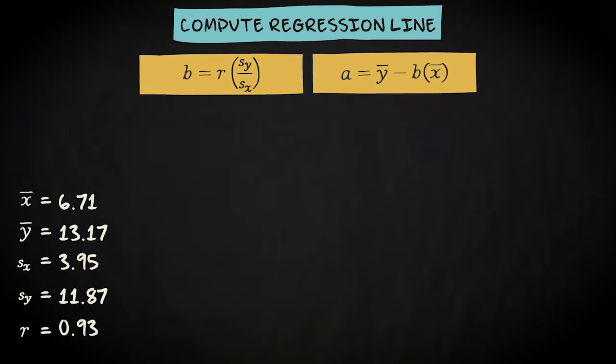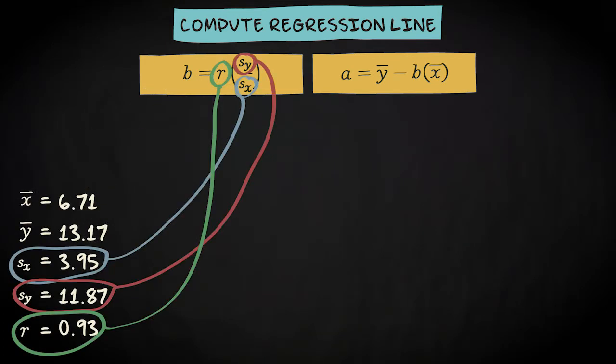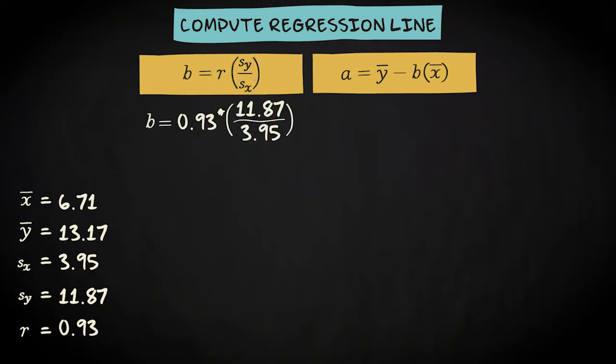These are the means, standard deviations and Pearson's r of our study. So to find the regression coefficient, we multiply 0.93 with 11.87 divided by 3.95. The outcome is 2.79.